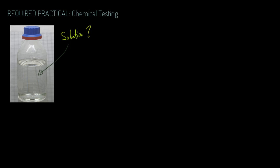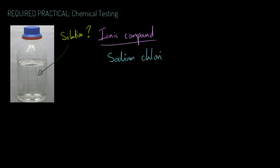Let's talk about this required practical - all to do with chemical testing. You have a solution of a chemical, but looking at it you really can't tell what it actually is. It could basically be anything; a lot of things in chemistry make for a colorless solution. In this particular required practical it is going to be a solution of some sort of ionic compound, and the aim of the game is to try and work out which ionic compound it is - it could be something like sodium chloride or potassium sulfate.